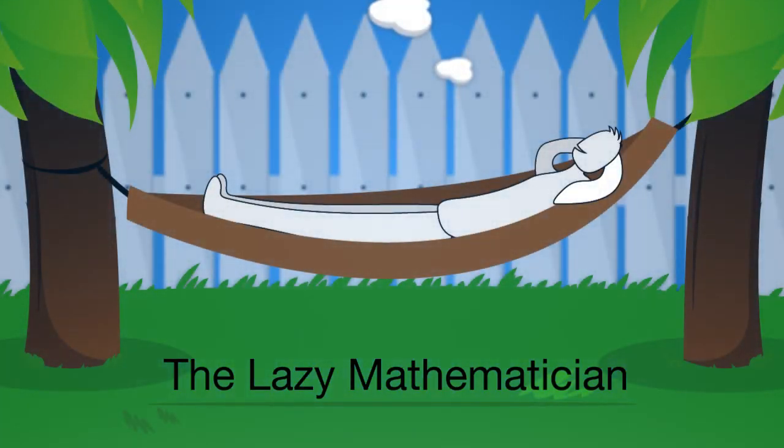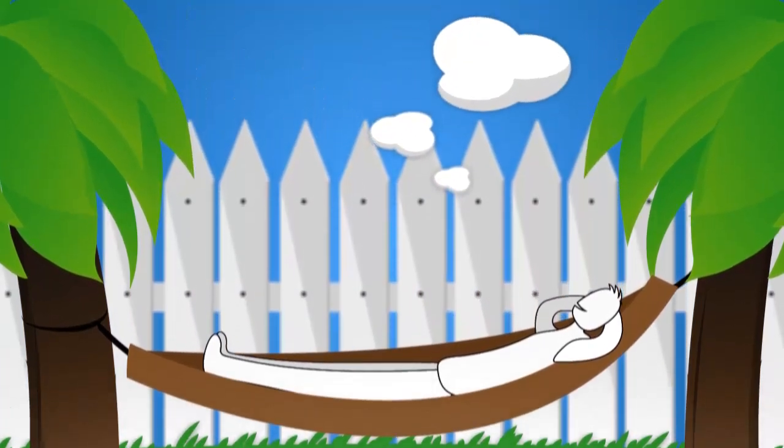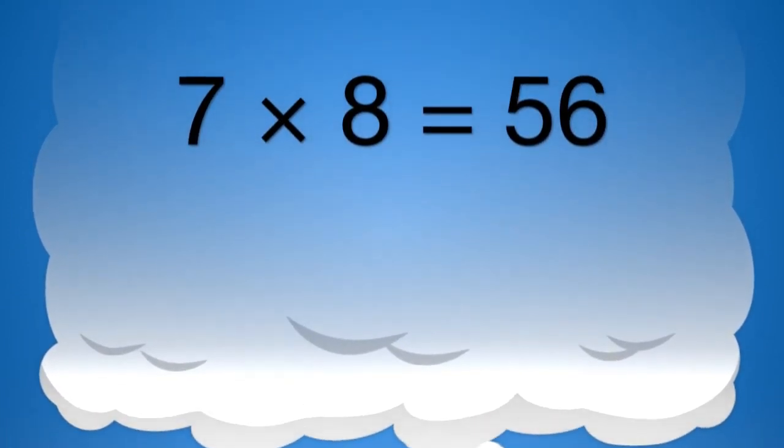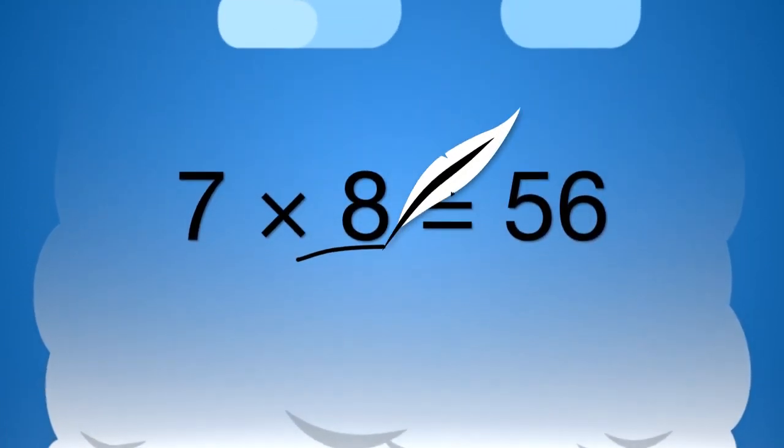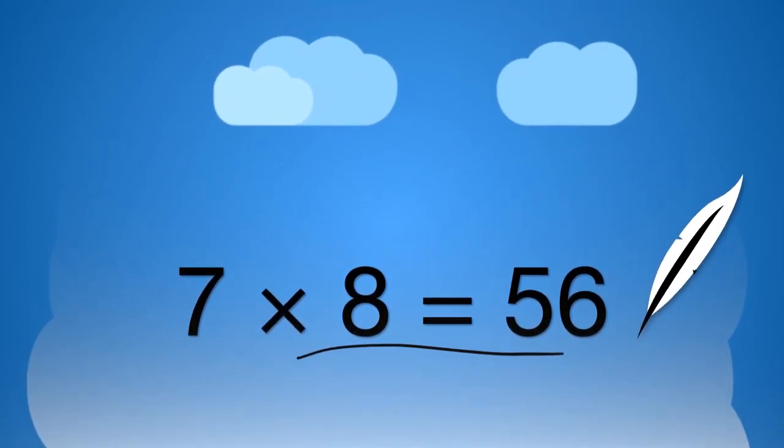Today I want to show you how a lazy mathematician can sometimes be a good mathematician. When I was in primary school I had trouble remembering that seven times eight was 56. It would be a lot easier if there were a lot fewer numbers.